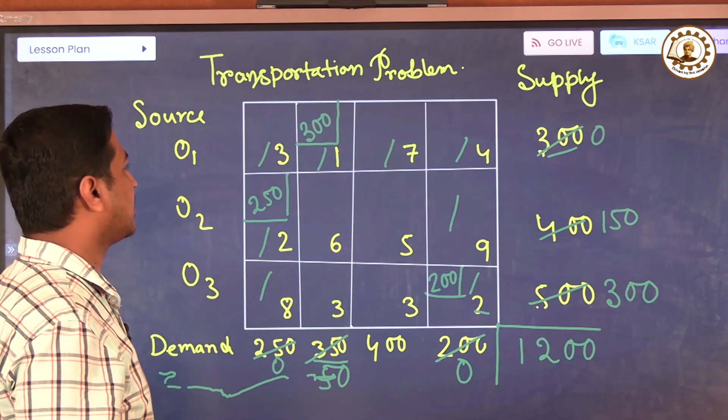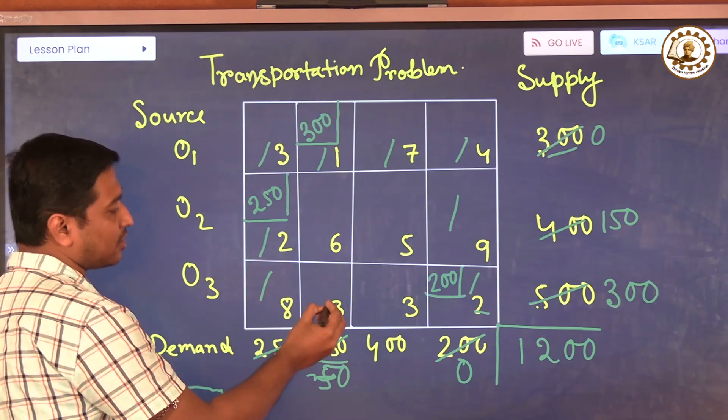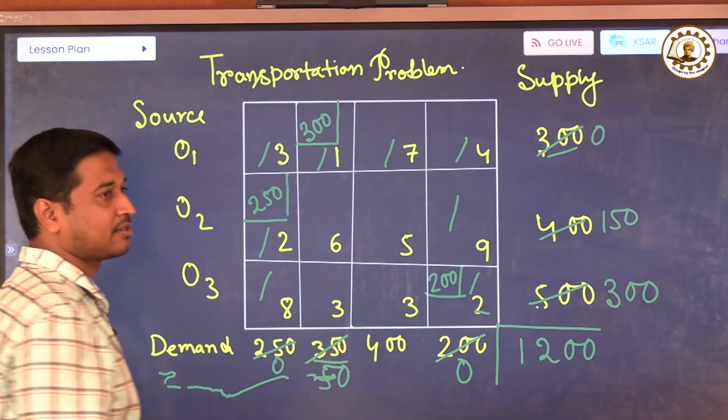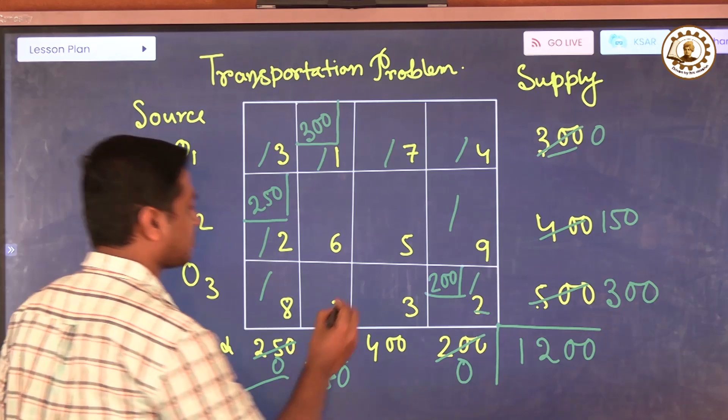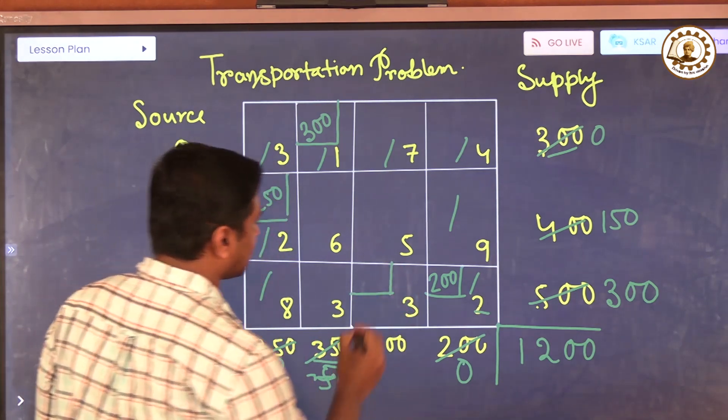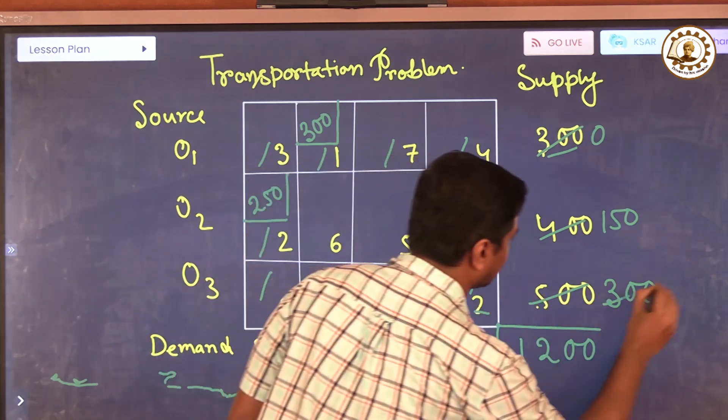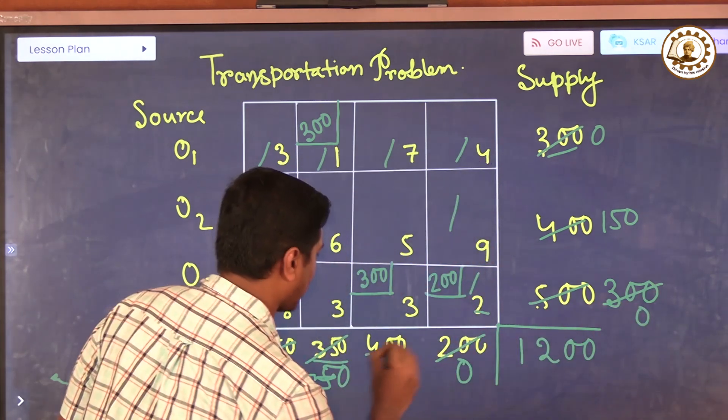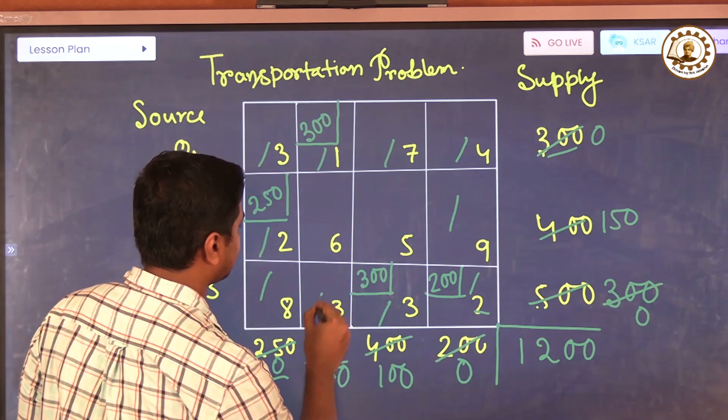Next remaining cell, again there are two blocks that is three and three. So you can take any cell. This is three, this is 300, this is zero, and this is 100. You can delete this.